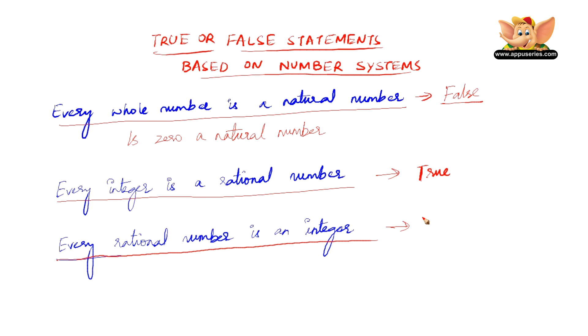Rational numbers include fractions such as 2 by 3, 3 by 4. But integers include only positive and negative whole numbers. Therefore, every rational number is not an integer. This is false.